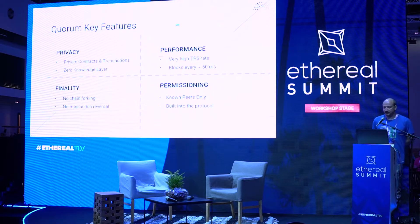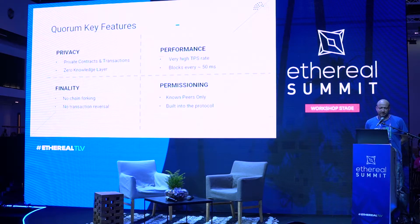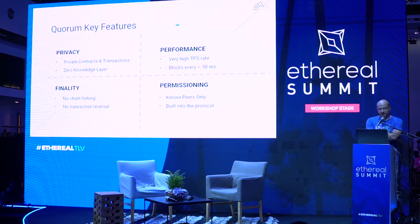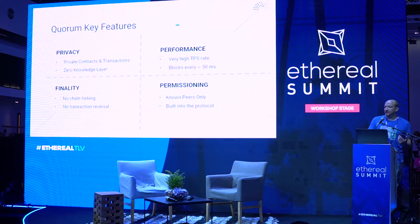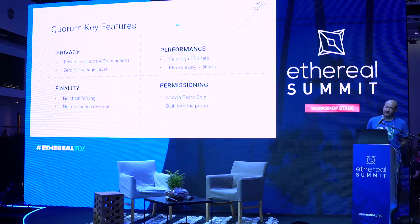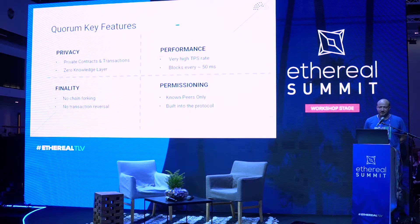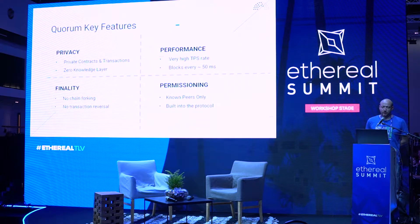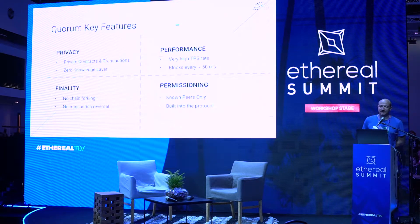In terms of performance, we're not running on mainnet, so we don't need a POW-based consensus algorithm. We replace it with a set of different consensus mechanisms you can pick from when you configure your Quorum blockchain. These are much faster than POW. One is a BFT-tolerant consensus algorithm called Istanbul. The other is RAFT, which is network-optimized for speed. Both offer very high TPS rates — you can do anywhere upwards of a thousand transactions per second.